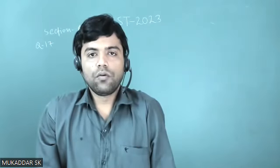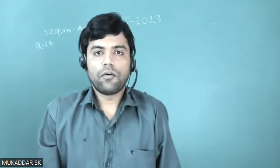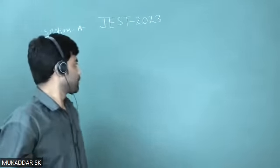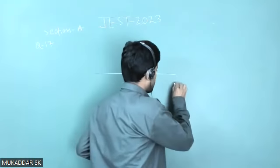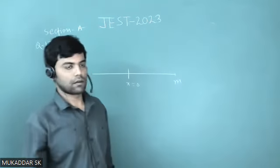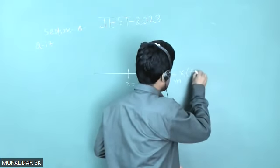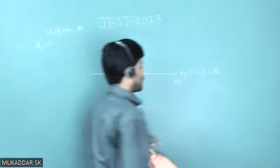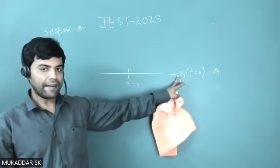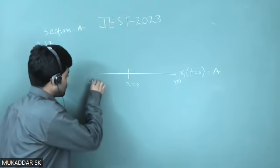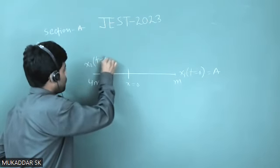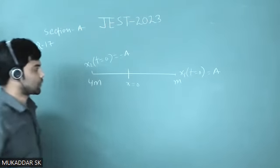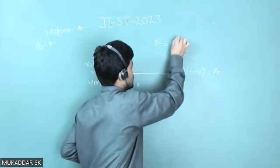In that question, you have two masses m and 4m subjected to a force F = -kx, and they are restricted to move along the x-axis. Mass m starts from rest at x = a at t = 0, meaning it starts from the right extreme position. On the other hand, the 4m mass starts from rest at x = -a at t = 0.